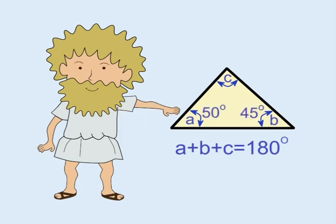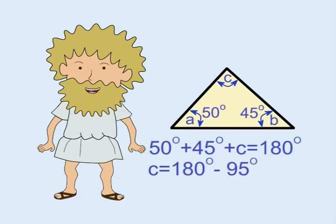In this example, angle A is 50 degrees and angle B is 45 degrees. So angle C equals 180 minus 95, or 85 degrees.